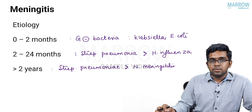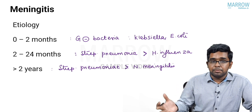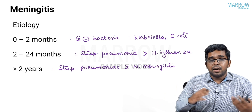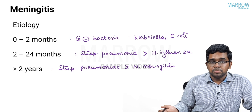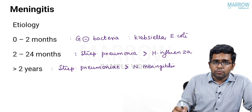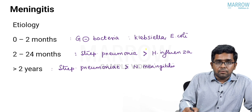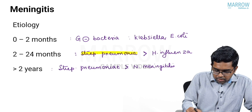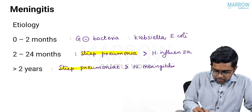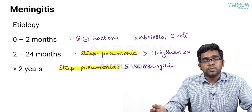After 2 months, or after the neonatal period, the overall commonest organism is always Streptococcus pneumoniae. This can be an MCQ question: which is the overall most common bacterial cause of meningitis in children? Your answer will be Streptococcus pneumoniae.